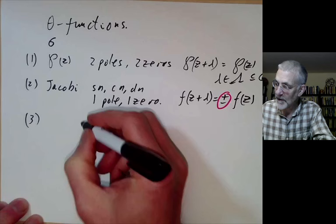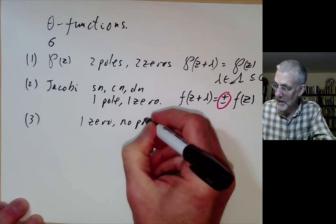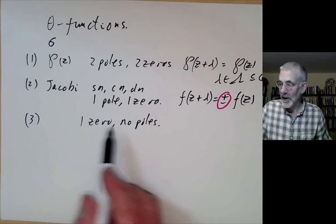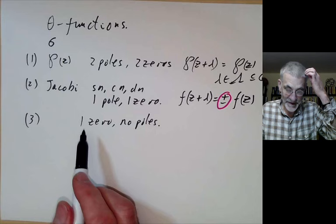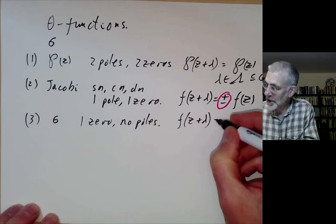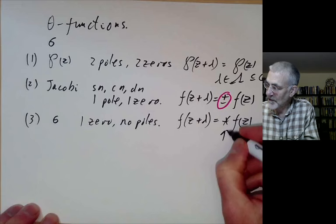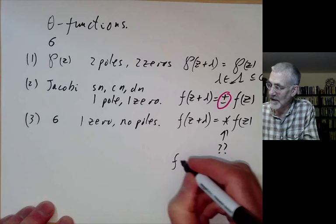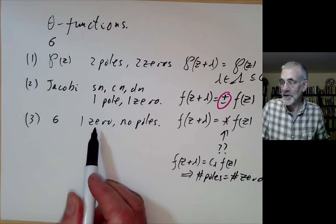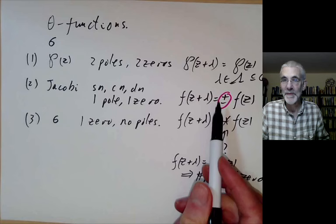So it would be really nice if we could have just one zero and no poles in a fundamental domain, because that would make it much easier to construct functions in terms of their zeros. This function does exist and is the sigma function we're going to talk about today. It's going to have some sort of functional equation with a new fudge factor. The problem is to figure out what this is. It can't just be a constant depending on lambda, because if f of z plus lambda equals c of lambda times f of z, this implies the number of poles equals the number of zeros. So the price we pay for having just one zero and no pole is that f is going to be even less periodic than before.